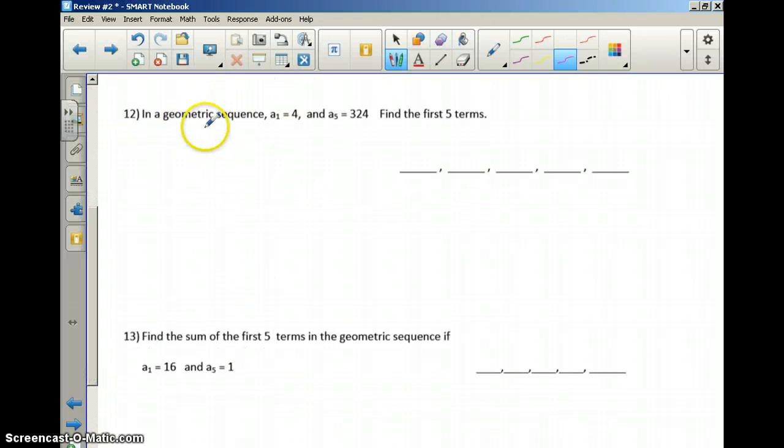Now a geometric sequence has a different formula that I need to know. The geometric sequence a_n is equal to a_1 times the common ratio, which is r, to the n minus 1 power. So my first term is 4, let's plug that in, I don't know my r, but I do know that I'm using 5 terms, because they told me that right here. So now that would be 5 minus 1, up as my exponent, and then I have the 324 down here.